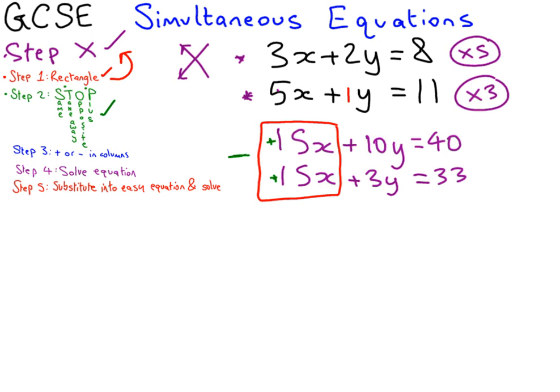So that's the sum we're going to do. And in step 3, we actually do this sum. We do it in our columns. So the first column, 15x take away 15x, it's eliminated. If you do this method right, by the time you get to step 3, some of your letters are going to start disappearing. That's the idea of the method. 10y take away 3y gives us 7y. 40 take away 33 gives us 7. Step 3 done.